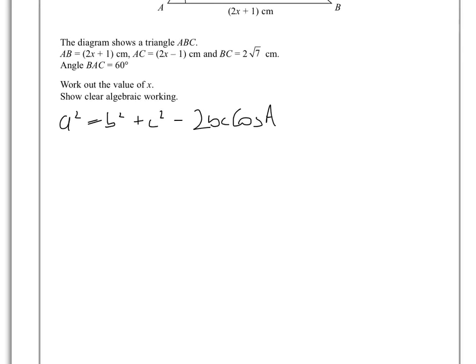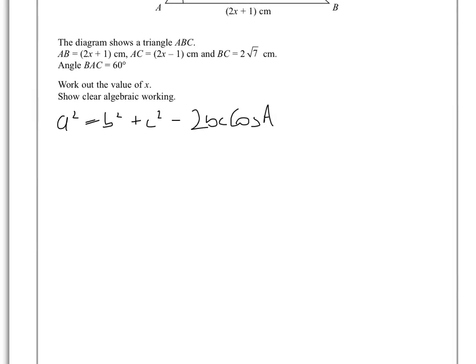So when we substitute the values in place of that, we will get 2 root 7 all squared equals 2x minus 1 squared plus 2x plus 1 squared. Sorry, it's not very well written, is it?